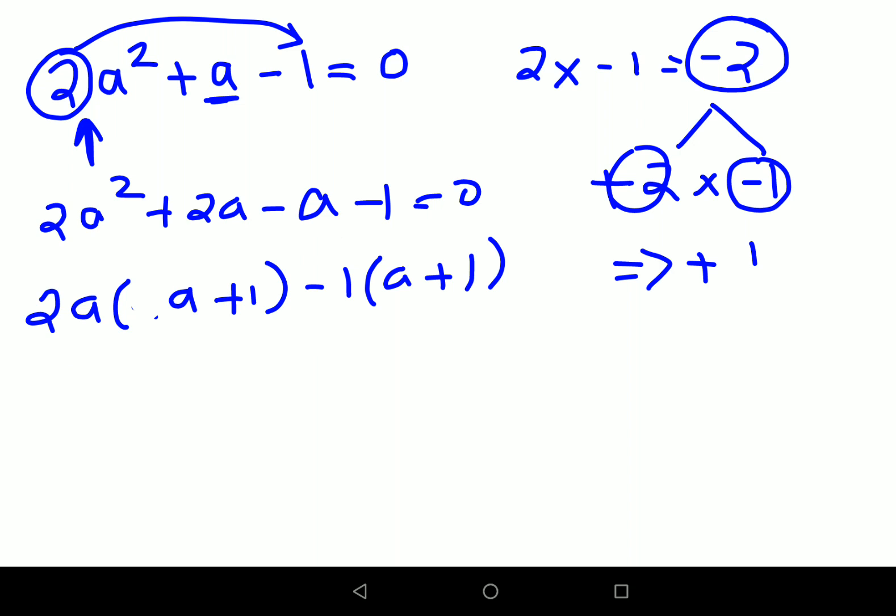So here now what happens is we will say 2a minus 1 or we have the other factor which is a plus 1 equals to 0. Therefore, I can say that a equals to minus 1 or a equals to plus half.